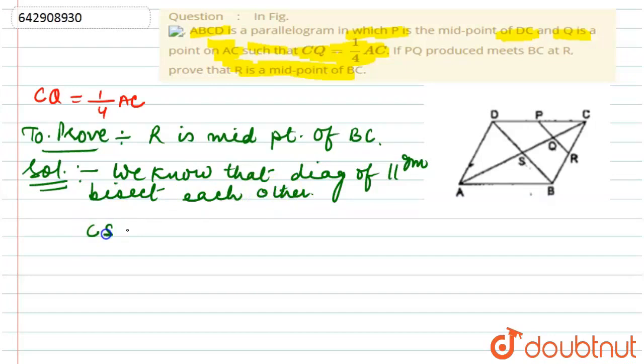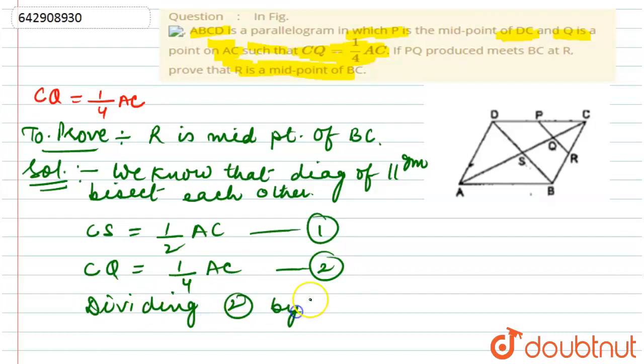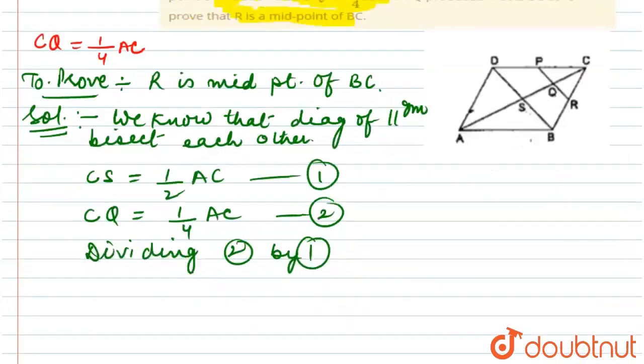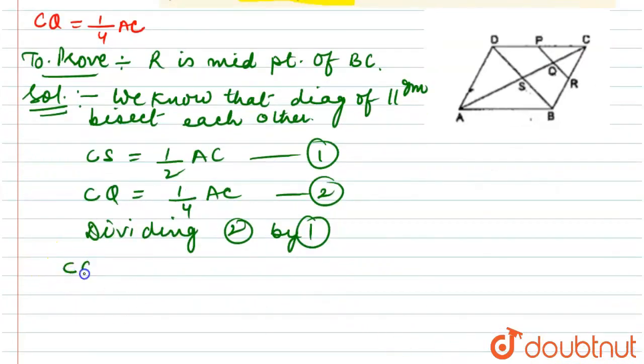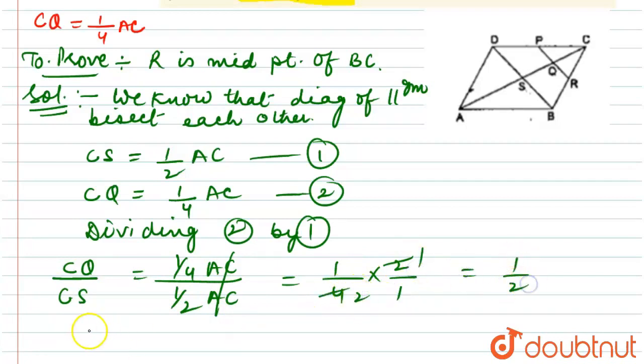Given that CQ equals 1/4 of AC, we find CQ upon CS. So CQ upon CS equals 1/4 AC upon 1/2 AC. AC cancels out. 1/4 multiplied by 2/1 gives us 1/2. This implies that CQ equals 1/2 CS.